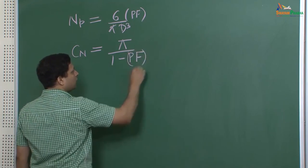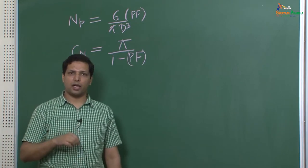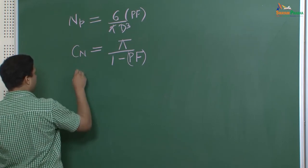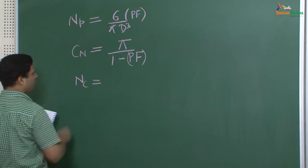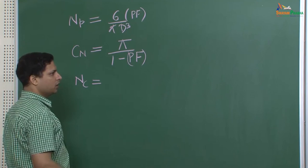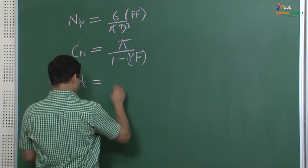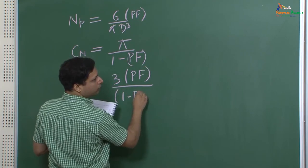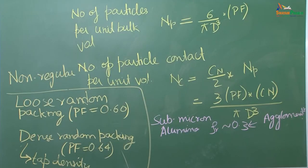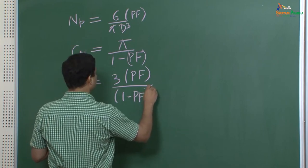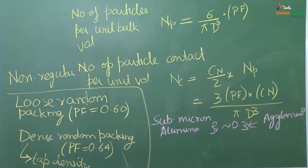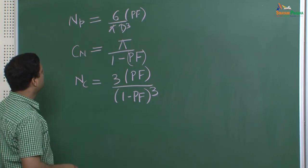We saw that NP is equal to 6 divided by pi D-cubed divided by Pf. This equation will be retained even when we are talking about non-regular structure. The coordination number is not something we can obtain for a non-regular structure very easily, but some researchers have shown that the coordination number can actually be given under certain conditions — a relation that we can utilize even for non-regular packing.